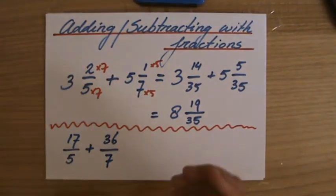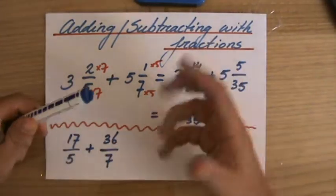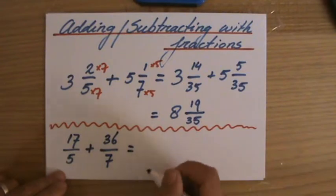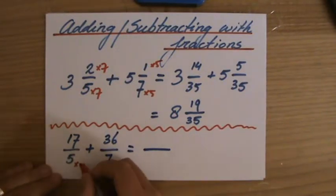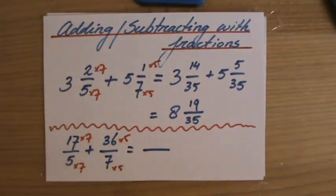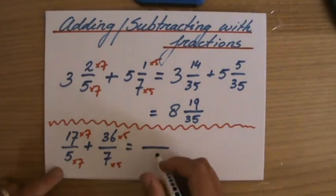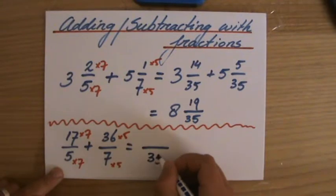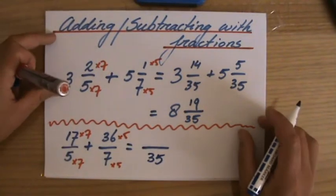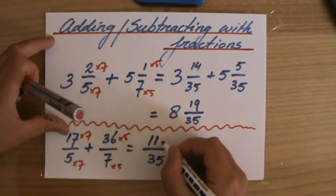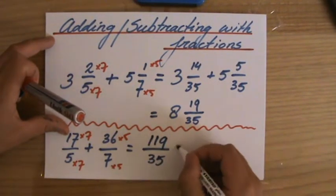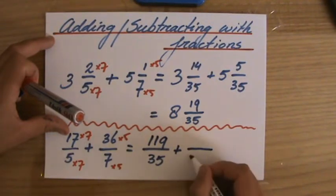So whenever I am adding mixed numbers, perhaps turn them into top-heavy fractions first, then you manipulate them, and then you find a common multiple. So this one still times seven, and that one still times five. So that is thirty-five, and seventeen times seven, well that is seventy plus forty-nine, that is one hundred and nineteen. Who needs a calculator? Plus, and the other one, thirty-five.